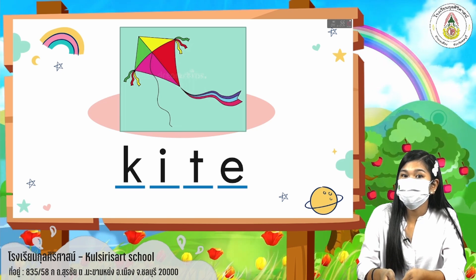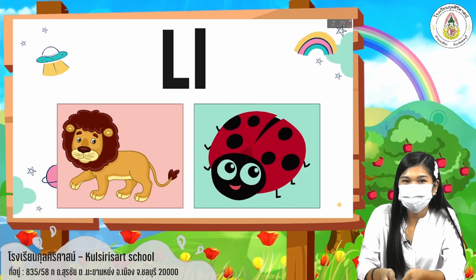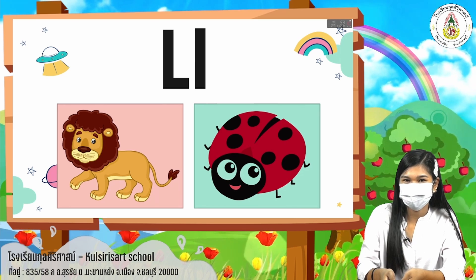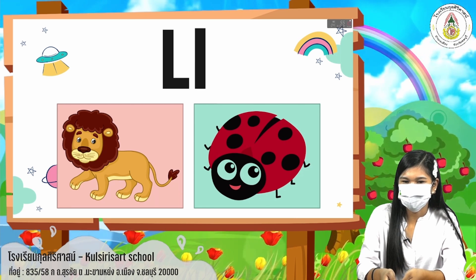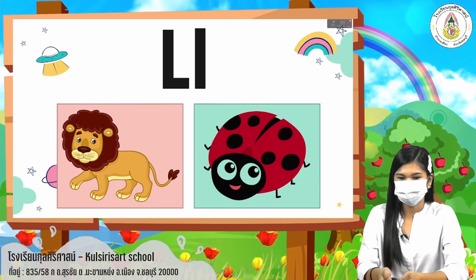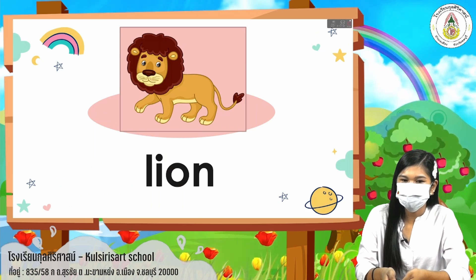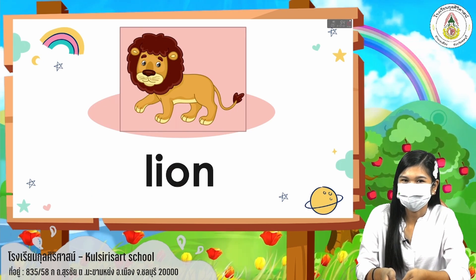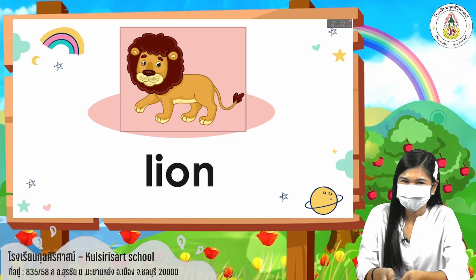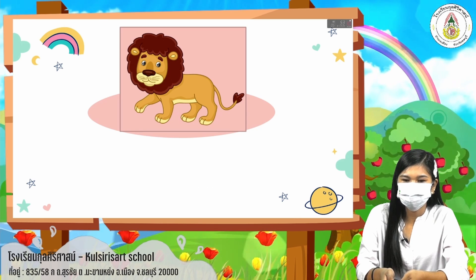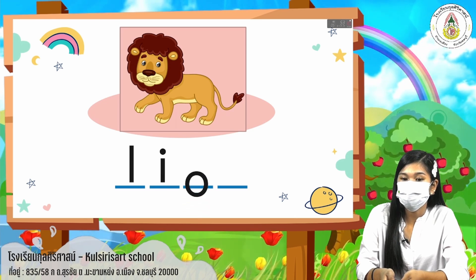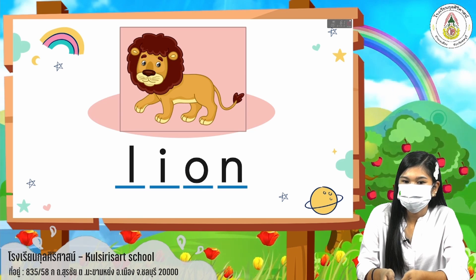Now let's move on to letter L. Again, what is the sound of letter L? L — L. I have here two pictures that start with letter L. Let's take a look. First, we have here: lion. Say it with teacher: lion. Good job. Now let's spell it out. Start with letter L, I, O, N. Lion.